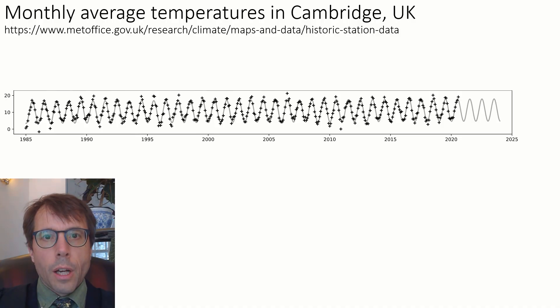Here's a data set we've looked at a couple of times already. The dots show monthly average temperatures measured at a Met Office station in Cambridge from 1985 to the present. I'm also plotting a fitted model, in this case a sinusoid.